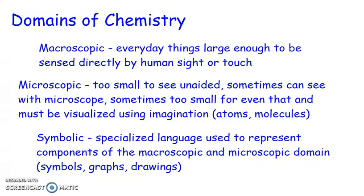The last domain is the symbolic domain, which is a specialized language that we use to represent things that are part of either the macroscopic or the microscopic domain — things like chemical symbols, graphs, and drawings. When we're looking at something that's part of the symbolic domain, we need to be able to tell whether it's symbolizing a macroscopic domain object or a microscopic domain object.